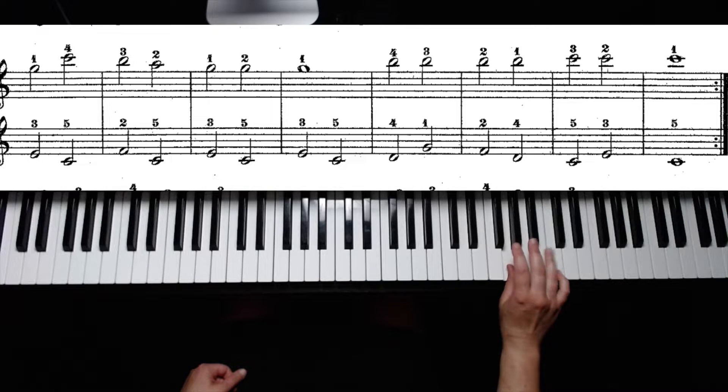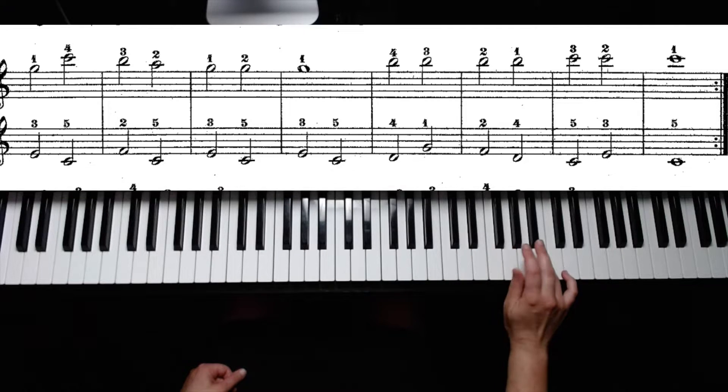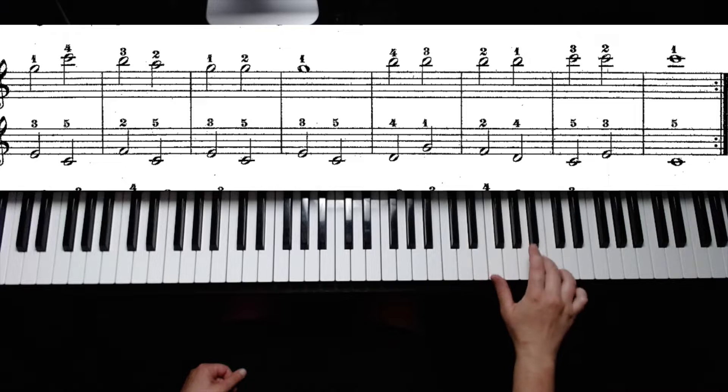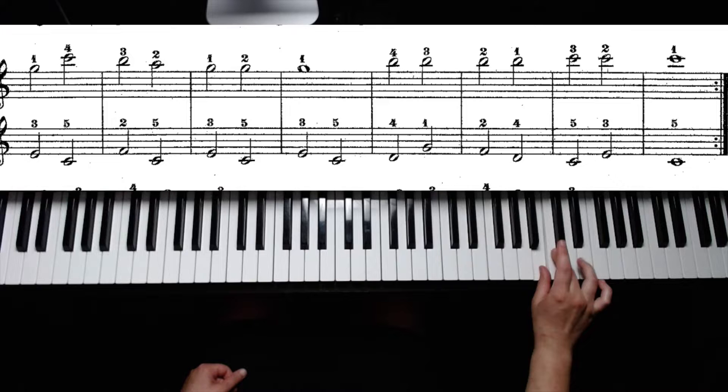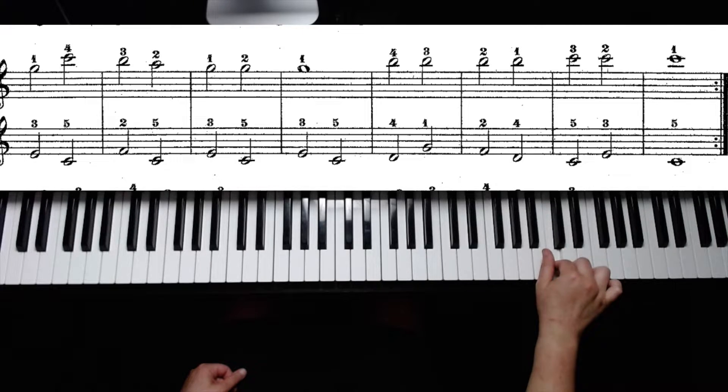This time when you play B, play B with your fourth finger. We're going to have four B's in a row. So we're going to play them with fingers four, three, two, one. Then C with three, then two, and then one.